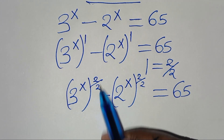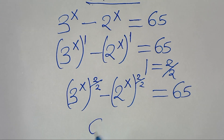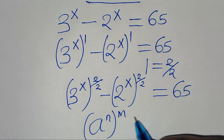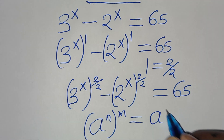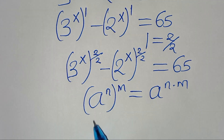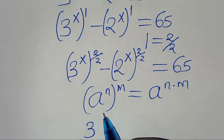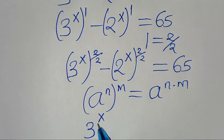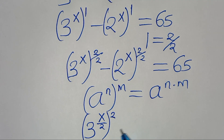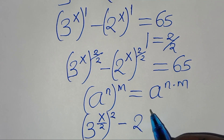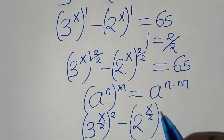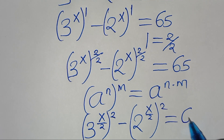Now, 3 to the power of x to the power of 2 over 2 is in the form of a to the power of n raised to the power of m, which we can express as a to the power of n times m. So this transforms to 3 to the power of x over 2 raised to the power of 2, minus 2 to the power of x over 2 raised to the power of 2, equal to 65.